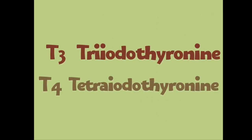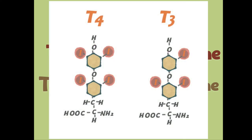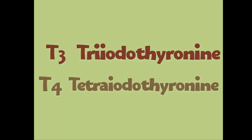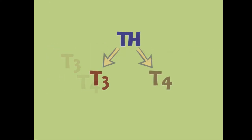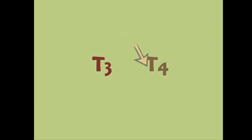T3 and T4 are collectively called thyroxin. T3 is triiodothyronine — 'tri' meaning three iodine atoms make up that molecule. T4 is tetraiodothyronine — 'tetra' meaning four iodine atoms surround that molecule. Now let's look at the function of the T3 and T4 hormones.